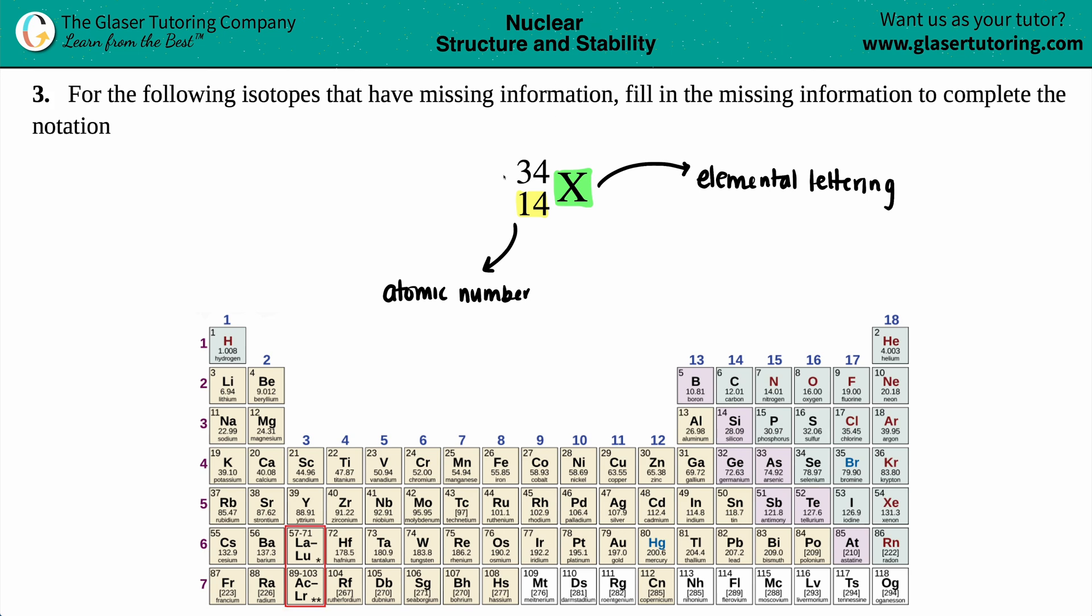You can find out what element it is by looking at that atomic number, and all your atomic numbers are the whole numbers on the periodic table. Sometimes they'll have the whole numbers on the top, sometimes on the bottom, but just find where the whole numbers are. In this case, we're searching for a 14.